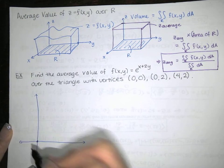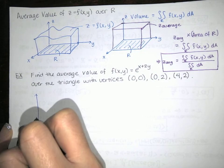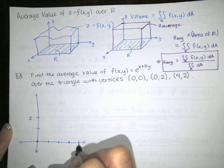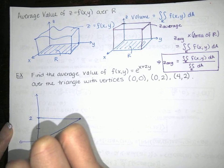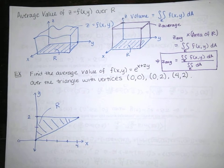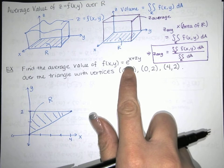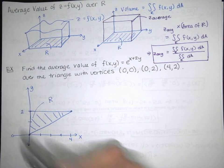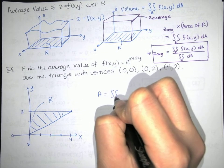The triangle has vertices at (0,0), (0,2), and (4,2). That's our region R in the xy plane. To find the average value of z, we need the double integral over R of z equals e to the x plus 2y, and we also need the area of this triangle. Since it's a triangle, we can find the area the traditional way: one half times base times height equals one half times 4 times 2 equals 4.